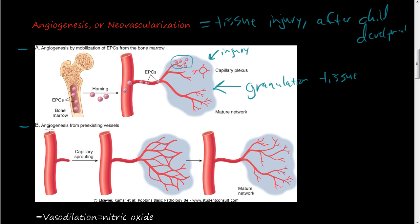The most common and well-understood pathway is angiogenesis from preexisting vessels. Here's an artery, and when you injure a tissue nearby, a little capillary sprout buds off from this blood vessel, goes over to the tissue being remade, and forms a capillary network. It forms too much at first, so there needs to be some pruning and remodeling to make blood flow to the area more efficient.